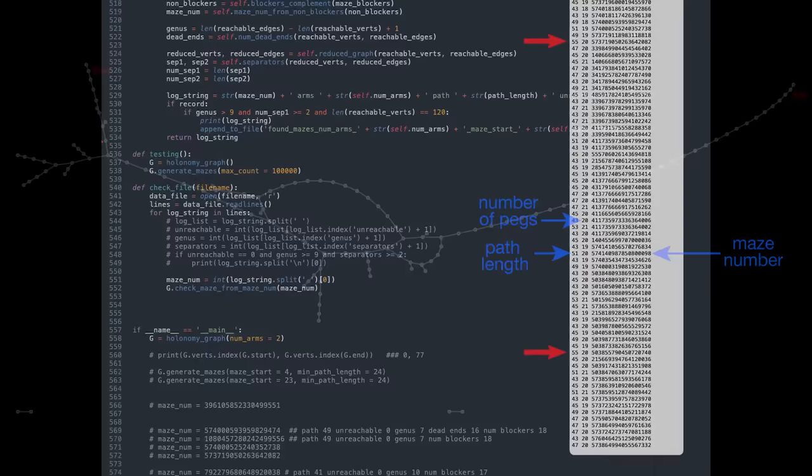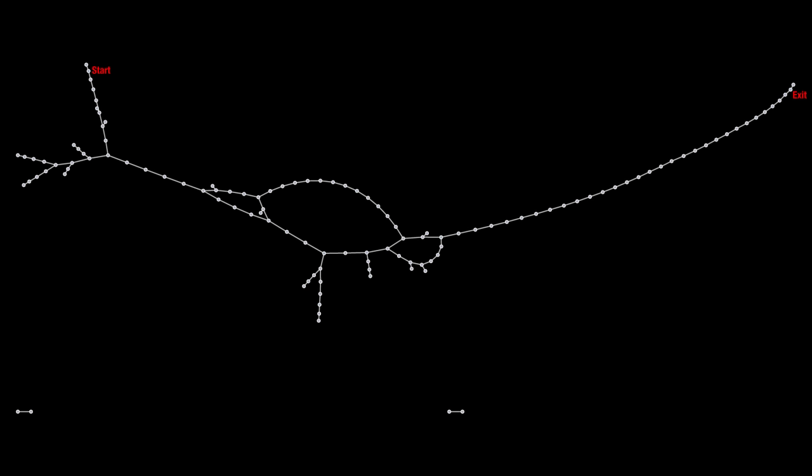But the graph looks like this. It's mostly linear, and there are even some inaccessible nodes down at the bottom, and so this isn't very good for a maze.